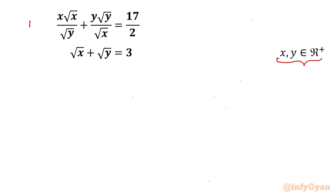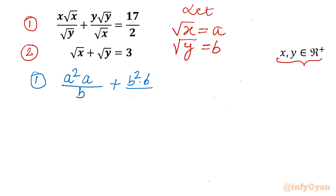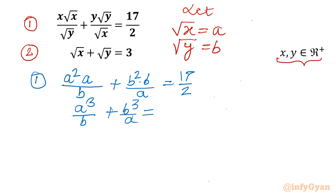Let's get started by considering equation numbers. I will use substitution. Let √x = a and √y = b. Rewriting equation 1: x·√x / √y becomes a²·a / b, and y·√y / √x becomes b²·b / a, giving us a³/b + b³/a = 17/2. This simplifies to (a⁴ + b⁴) / ab = 17/2.